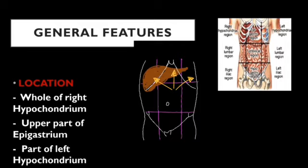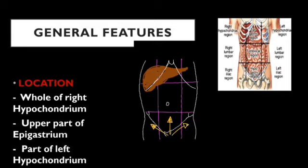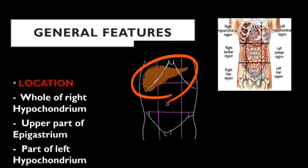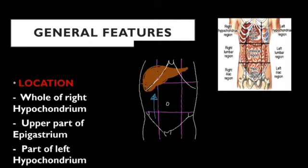The middle three quadrants are the right lumbar region, left lumbar region, and the umbilical region in the center. The lower three are the right and left iliac regions with the hypogastric region in the center. The liver occupies most of the right hypochondric region, the upper part of the epigastric region, and a part of the left hypochondric region. Sometimes it extends downward and occupies the upper part of the right lumbar region too.